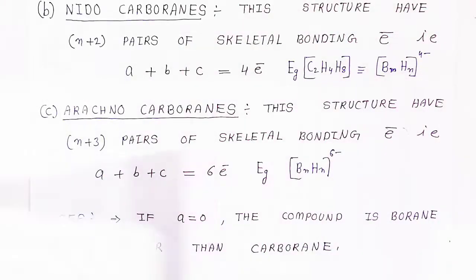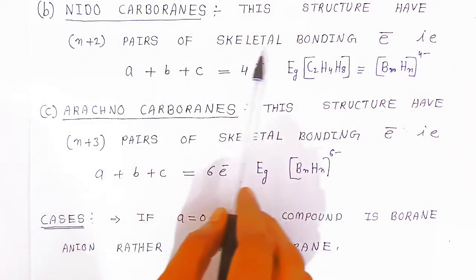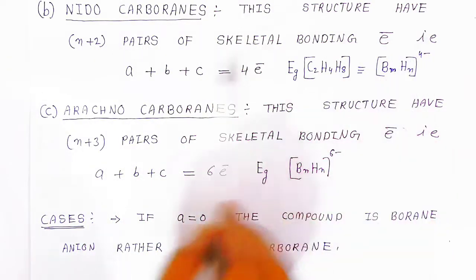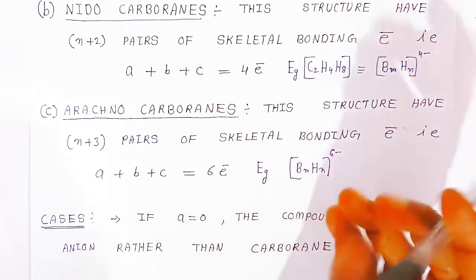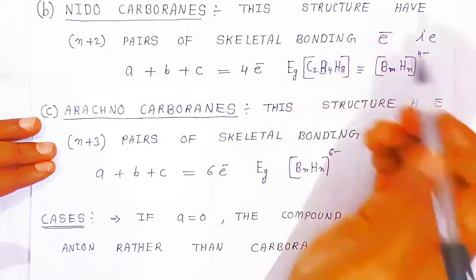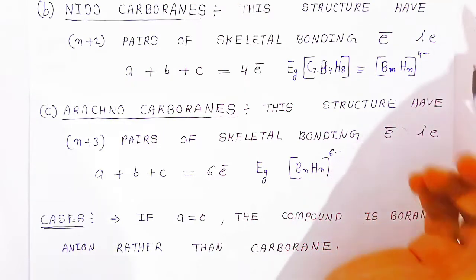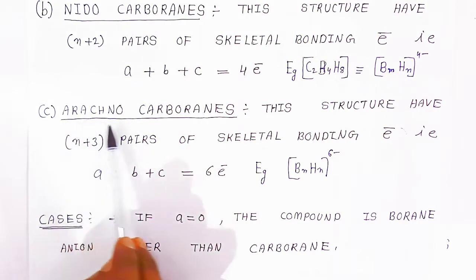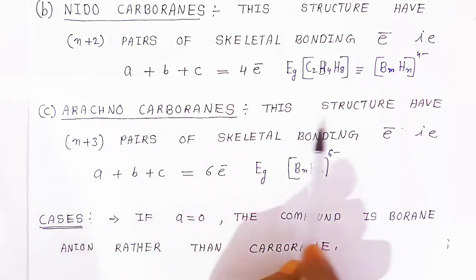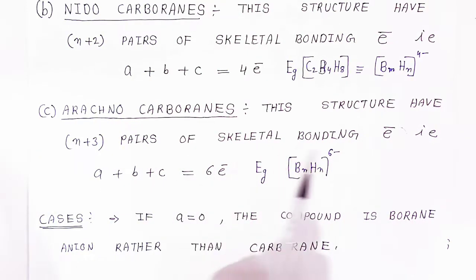The second group is nido-carboboranes. These structures have n+2 pairs of skeleton bonding electrons, where A plus B plus C equals 4 electrons. The formula is C2B4H8, corresponding to BmHn raised to 4-minus, which is very important. The third group is arachno-carboboranes, which have n+3 pairs of skeleton bonding electrons, where A plus B plus C equals 6, giving a power of 6-minus — BH raised to 6-minus.